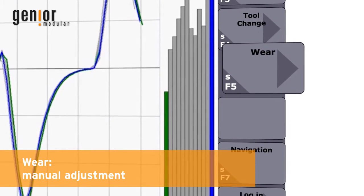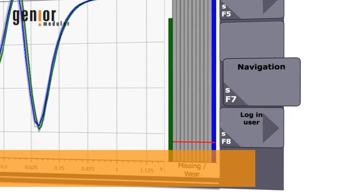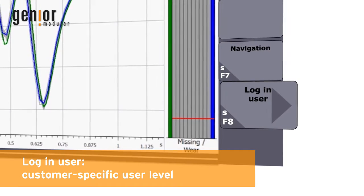Optional functionality includes manual adjustment, a second user level, and a customer-specific user level.